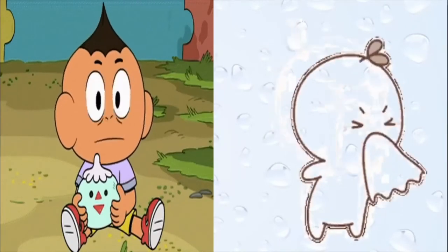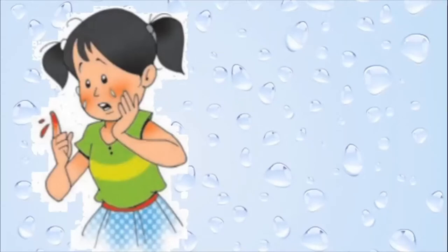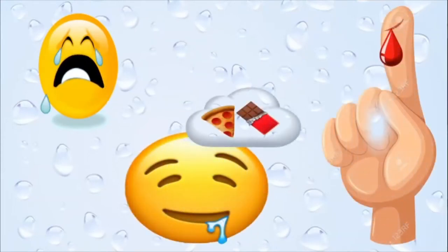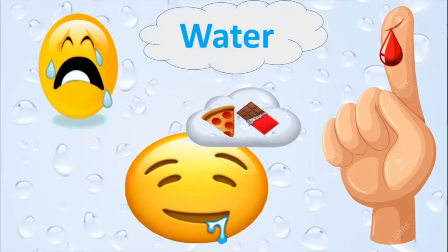Sometimes when you are sharpening a pencil using a blade, or when your mummy gives you work to cut onions or tomatoes and you are not careful, you cut your hand by mistake — and what comes out? Blood comes out of your finger. Now, blood is also a kind of water which comes out of your body. So water is present in our body in the form of tears, saliva, blood, etc. Can you see how water is a very important part of our body?